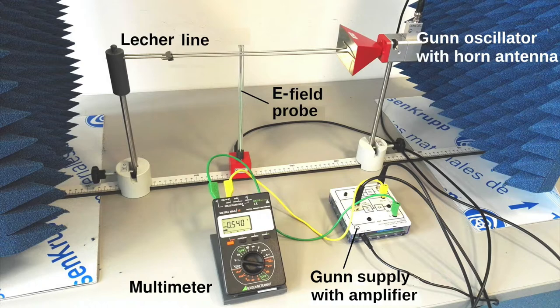Consists of a gun supply with amplifier, a gun oscillator with horn antenna, an E-field probe, a voltmeter, a scale, and a Lecher line.